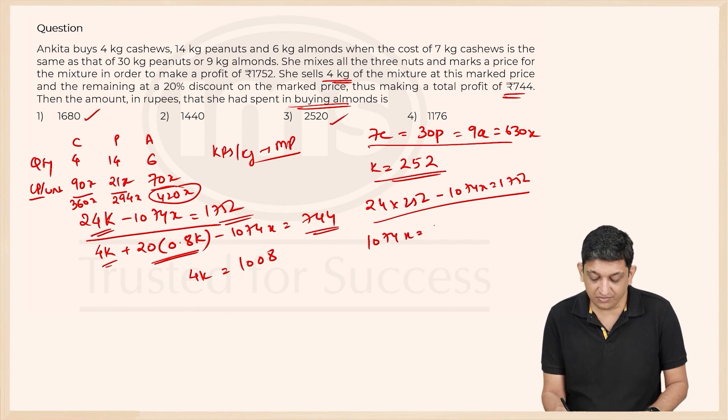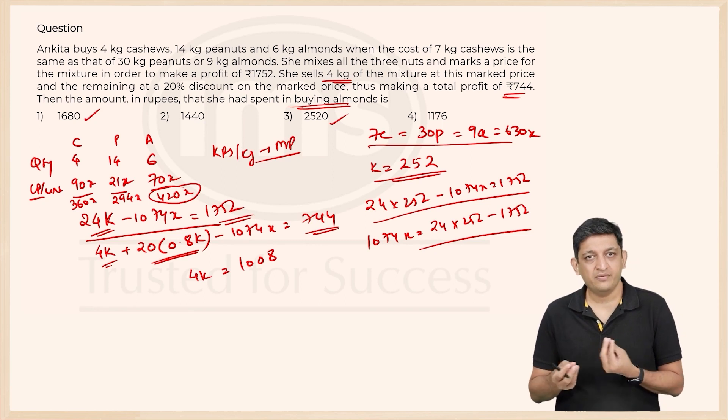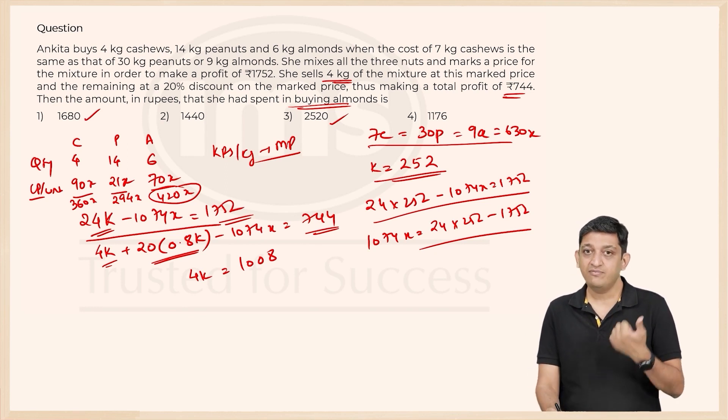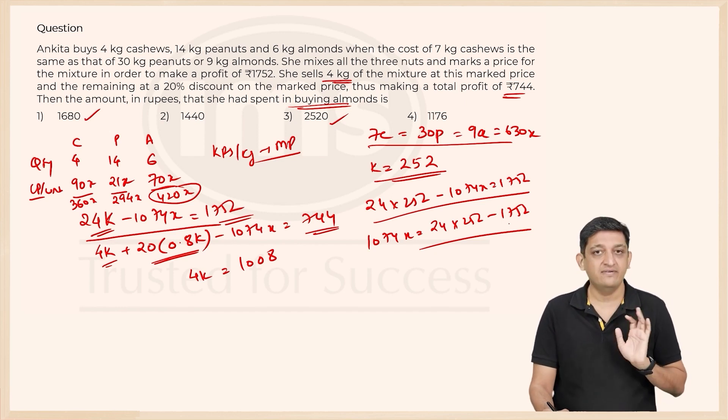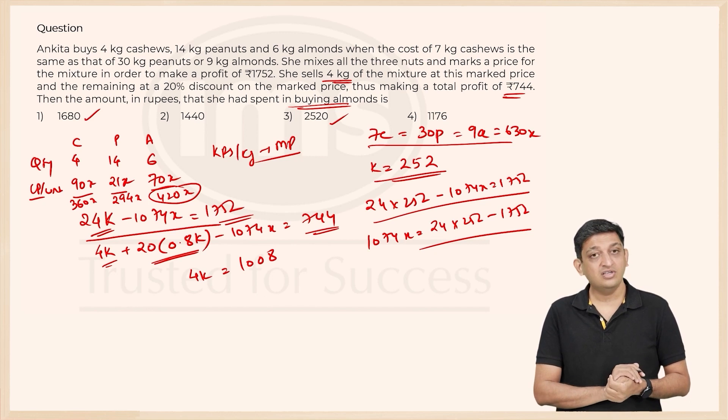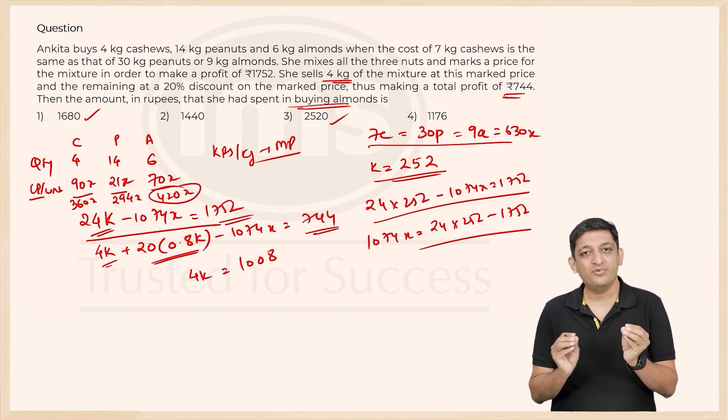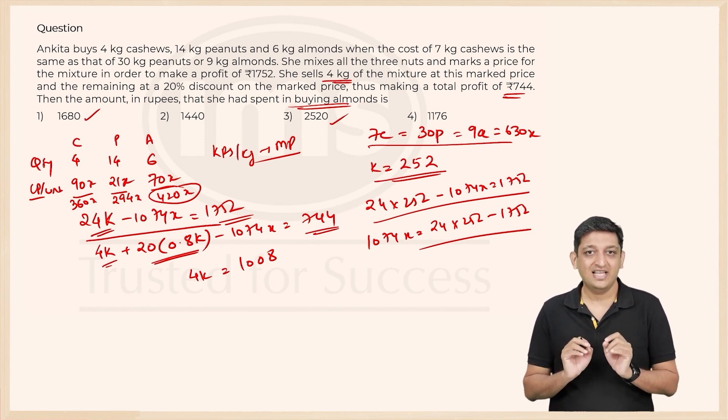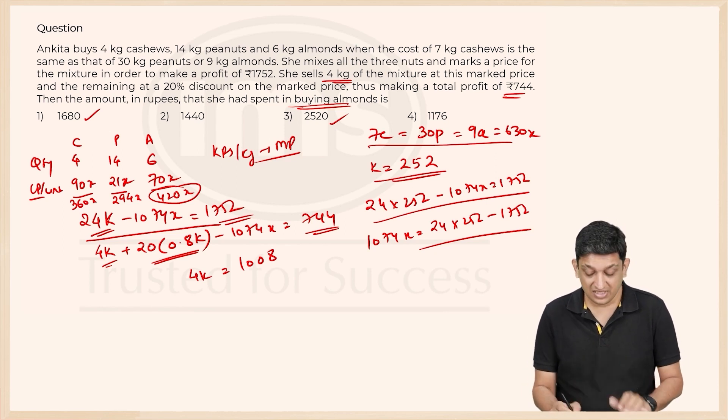So in this case 24 into 252 minus 1074X will be 1752. Now we will get 1074X equals 24 into 252 minus 1752. Now we just need to figure out whether 1752 is divisible by 24 or not. So you have to just figure out whether it is divisible by 3 and 8. 7 plus 5, 12 plus 2, 14 plus 1 is 15, definitely divisible by 3. 752 by 8, 8 nines are 72, 32 is left, 8 fours are 32, definitely divisible by 8 as well. 1074 in this context if you look at it, again 7 plus 4, 11 plus 1, 12 divisible by 3 for sure. 074 is not divisible by 8. So that might make it slightly painful. But then again we need to find 420X, so we can just stay put and see what happens to the other part of things.